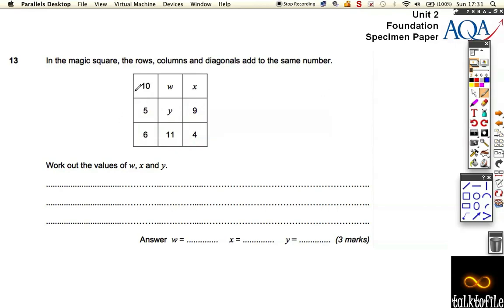So, if we add down here, 10 plus 5 plus 6 makes 21, and if I add it across here, 6 plus 11 plus 4 also equals 21. So I just checked that it works out fine.